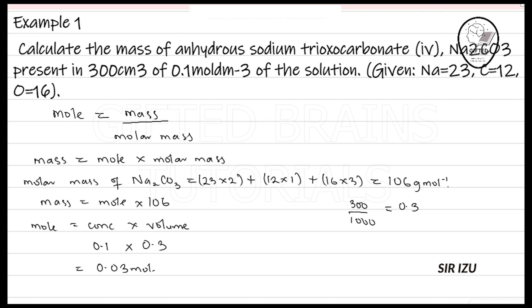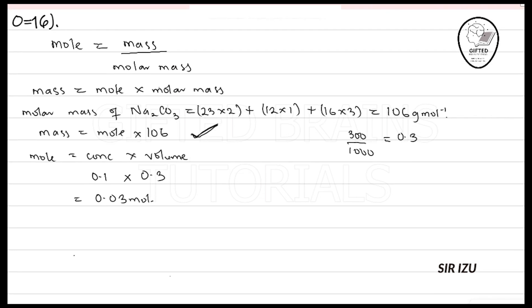We have gotten our mole now. We now come and use this mole in this relationship over here to get the mass. So most stoichiometry questions will come in this form. What is then the mass? The mass will equal the mole, which is 0.03 now, multiplied by 106, and here we have 3.18 grams.